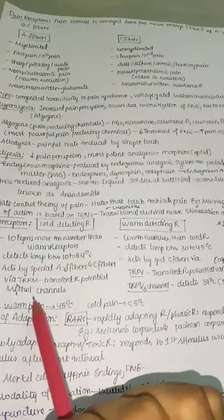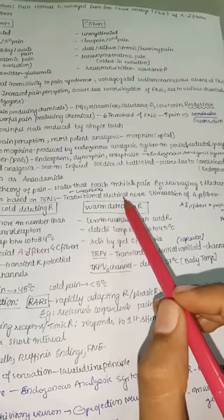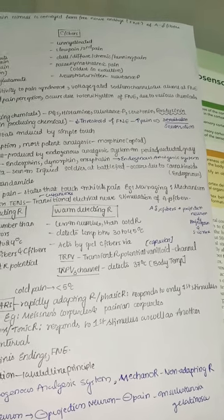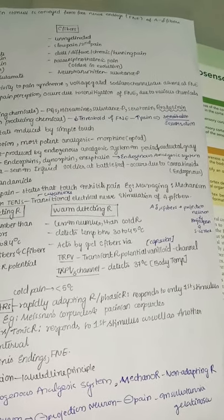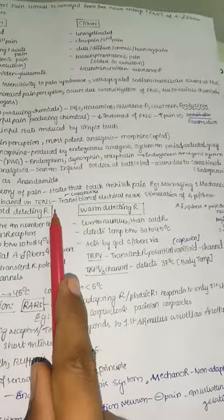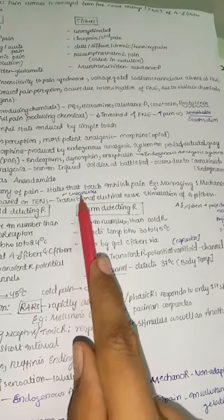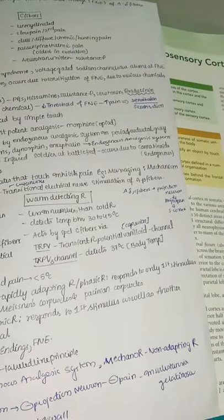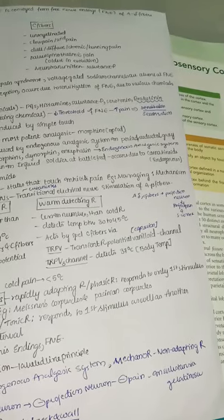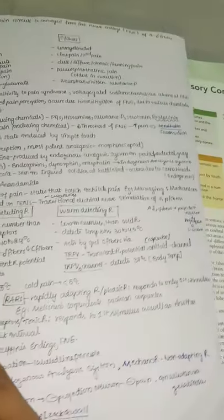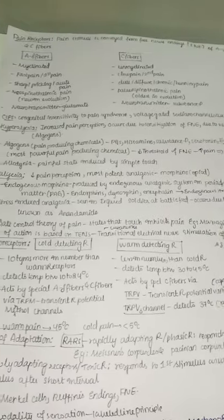The gate control theory of pain states that touch inhibits pain — the basis of massaging technique. The mechanism is based on TENS — transcutaneous electrical nerve stimulation of A-beta fibers. When we massage, we stimulate A-beta fibers (touch fibers), which inhibit pain perception inside the body.